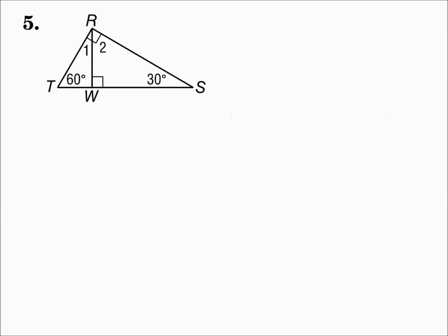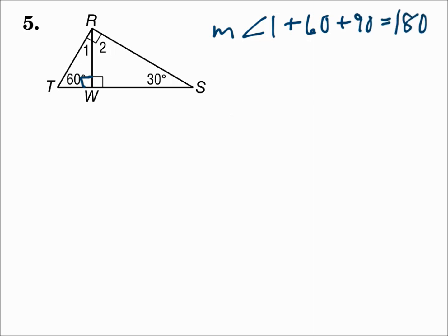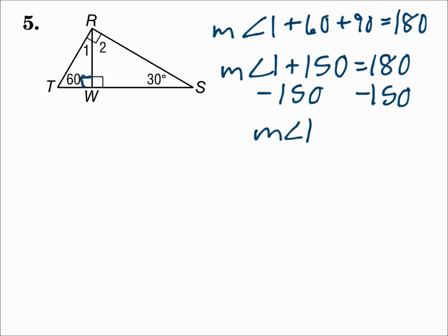Number five. Here we have two triangles next to one another. On the left I know one angle measure, and on the right I know two. Angle RWS is a right angle, and because of the linear pair formed at the bottom, angle RWT is also a right angle, because 90 plus 90 is 180. The measure of angle one plus 60 plus 90 equals 180. 60 plus 90 is 150. Subtract 150 from each side, and the measure of angle one is 30.